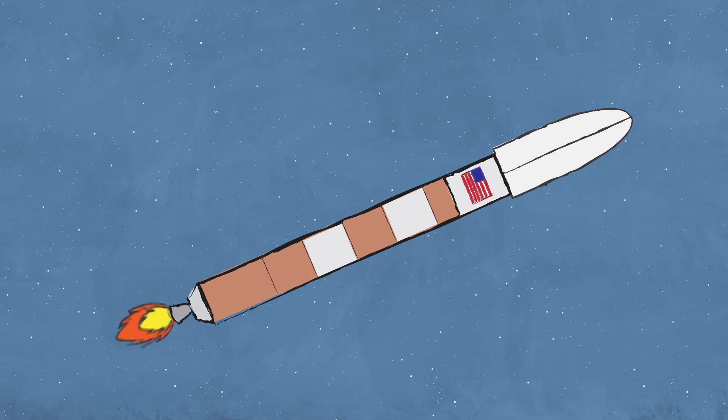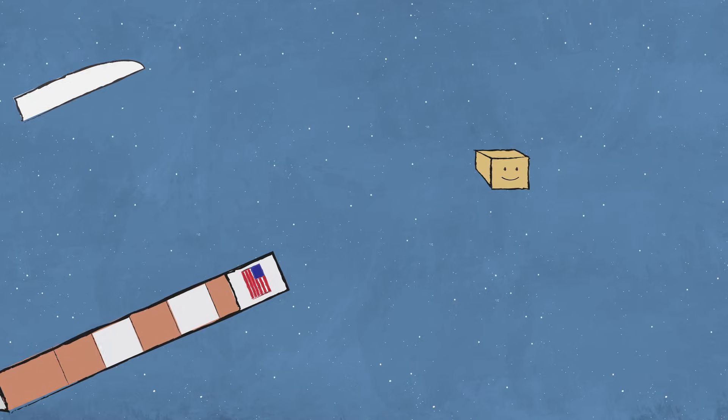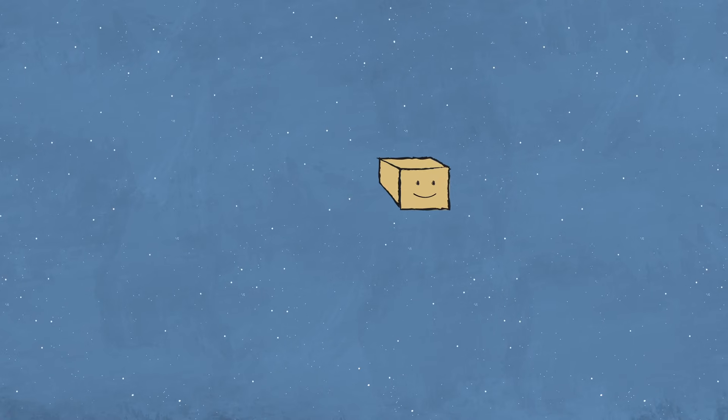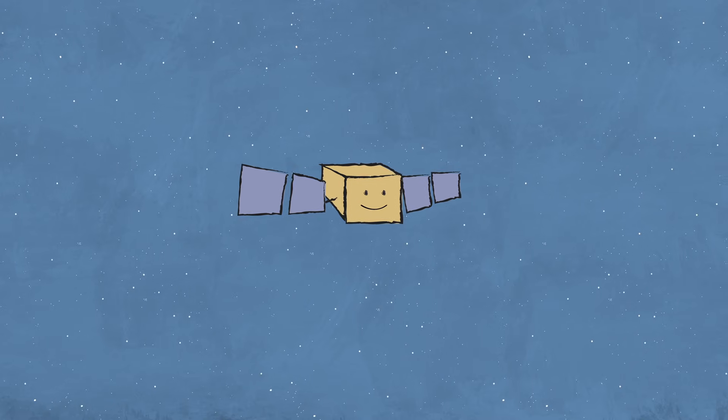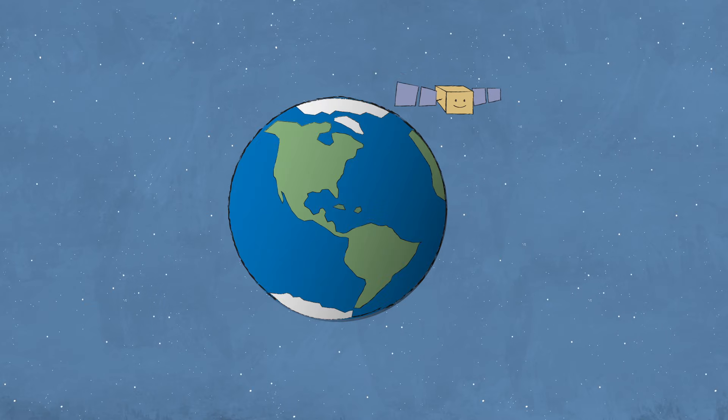Once the rocket reaches the right location above Earth, it lets go of the satellite. The satellite uses the energy it picked up from the rocket to stay in motion. That motion is called momentum.